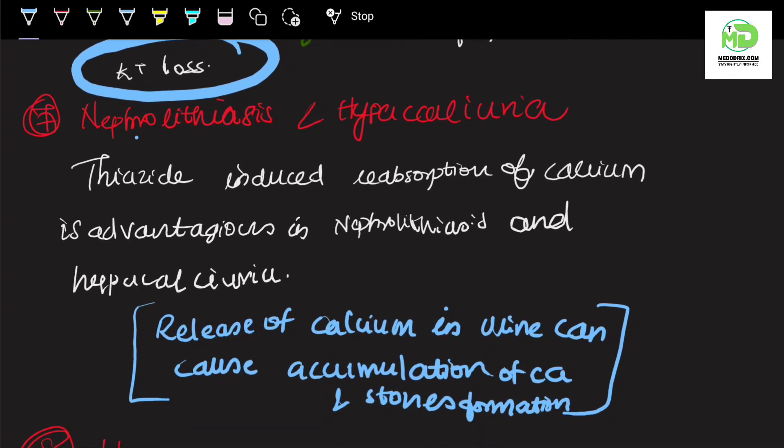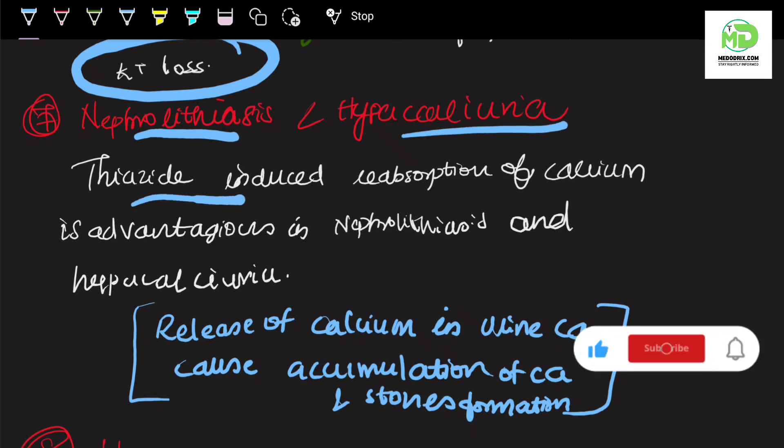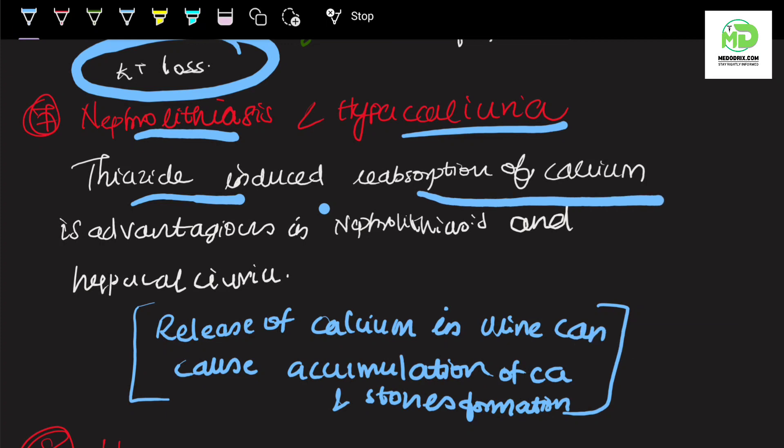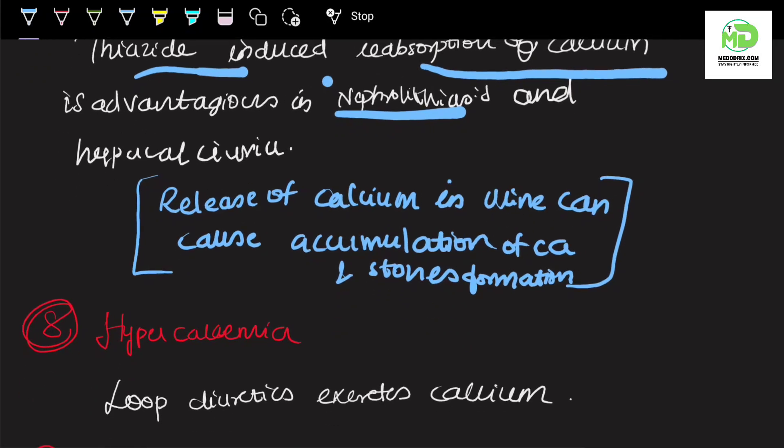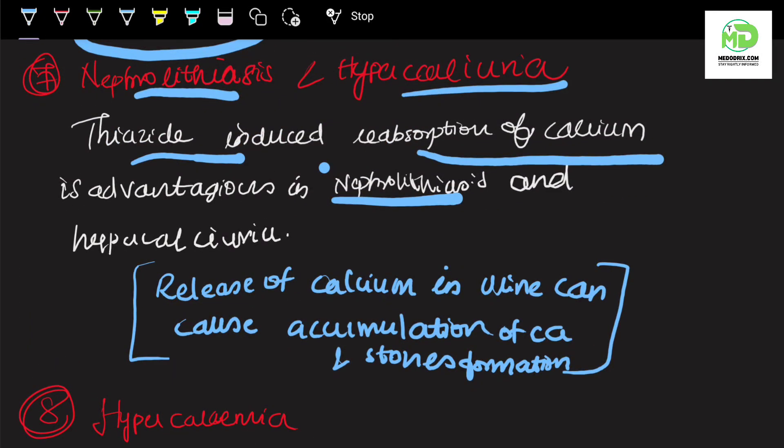The seventh condition is nephrolithiasis and hypercalciuria. Thiazide-induced reabsorption of calcium is advantageous in nephrolithiasis and hypercalciuria. Release of calcium in urine can cause accumulation of calcium and stone formation. When thiazide diuretic is given, it induces reabsorption of calcium and prevents release of calcium into the urine. This is the choice of drug in nephrolithiasis and hypercalciuria.